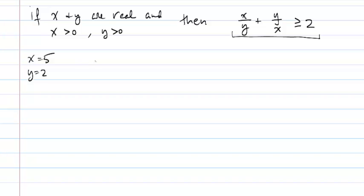And if I plug those two values in for x and y, I get 5 over 2 plus 2 over 5 on the left-hand side. Now the thing that I noticed right away is that one of the terms, 5 over 2, is 2.5, which by itself is already at least 2.